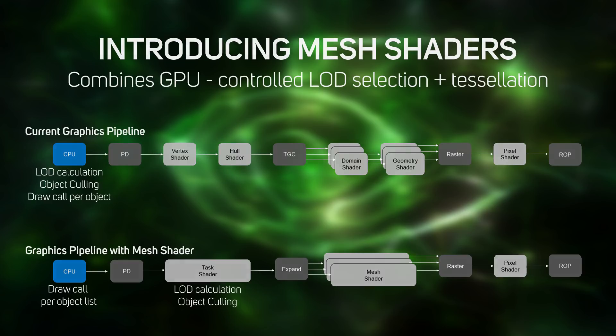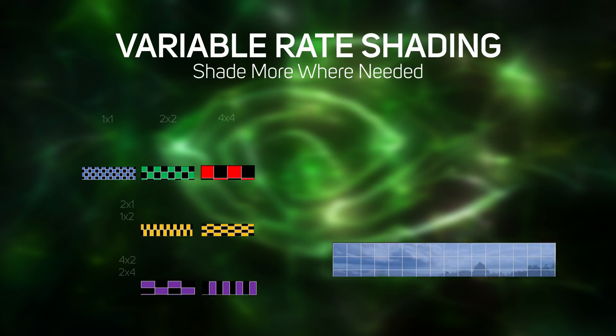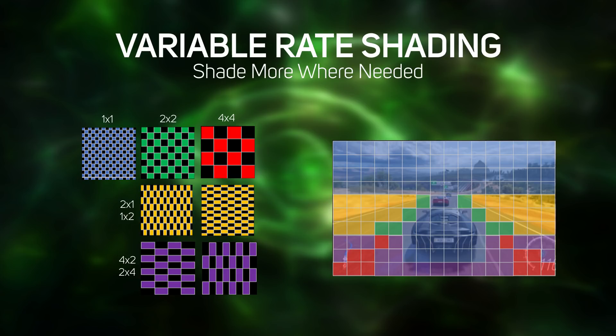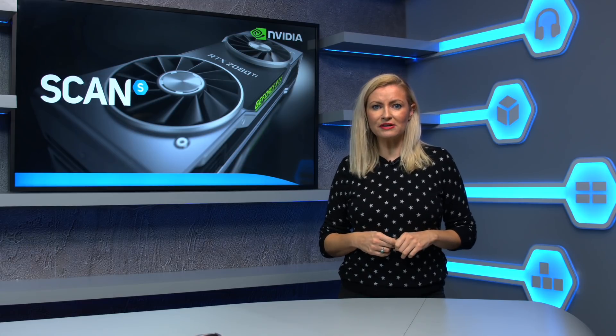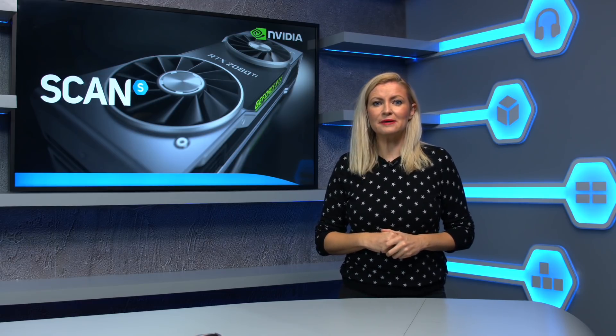Another new feature is Variable Rate Shading, or VRS, which enables games developers to apply different levels of shading to individual or groups of pixels that aren't critical to image quality, saving GPU horsepower and increasing the frame rate. Another new feature is Texture Space Shading, which helps to cut down on shading the same objects multiple times, as the results can now be cached in memory and reused. Finally, there's Multi View Rendering, or MVR, which enables multiple views to be rendered in a single pass, such as when gaming in VR.